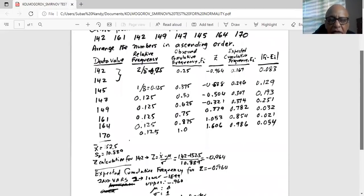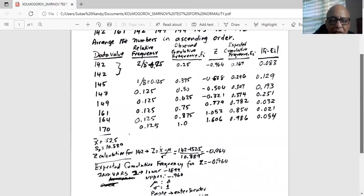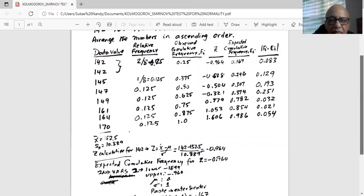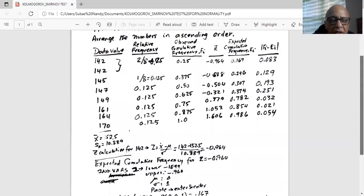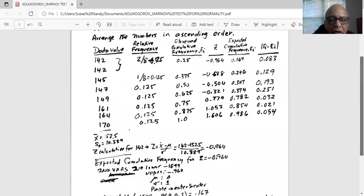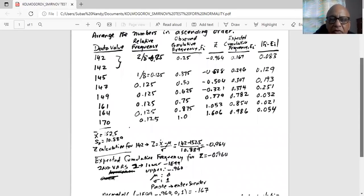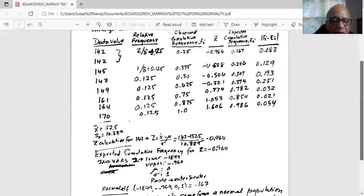Now for the next column we need to calculate the expected cumulative frequency. How do I get it? Well, I have the z score. I want to find out what portion or what percentage of the data lie below that z score of minus 0.964. Or in other words, if you think of the normal curve, what percent of the standard normal curve is below a z score of minus 0.964.